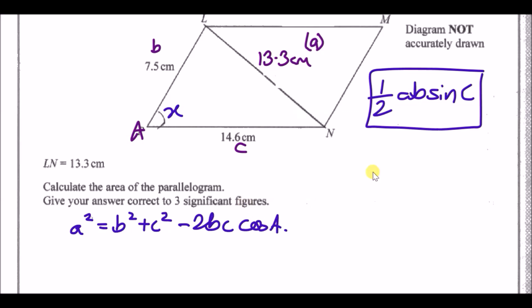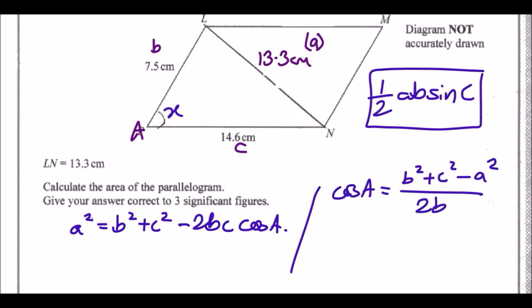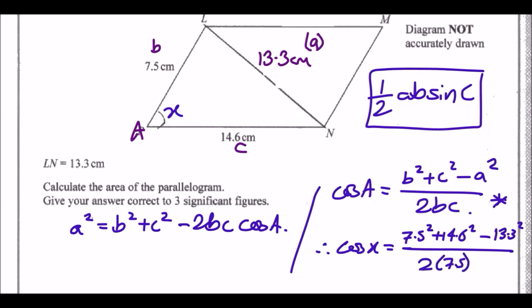Since we want to find the angle, we use the rearranged formula: cos A = (b² + c² − a²) / 2bc. Substituting: cos x = (7.5² + 14.6² − 13.3²) / (2 × 7.5 × 14.6).